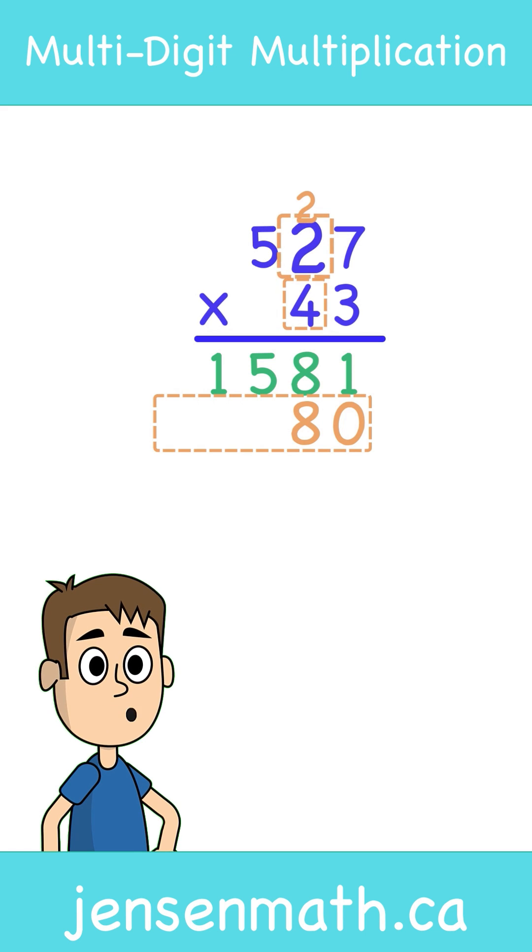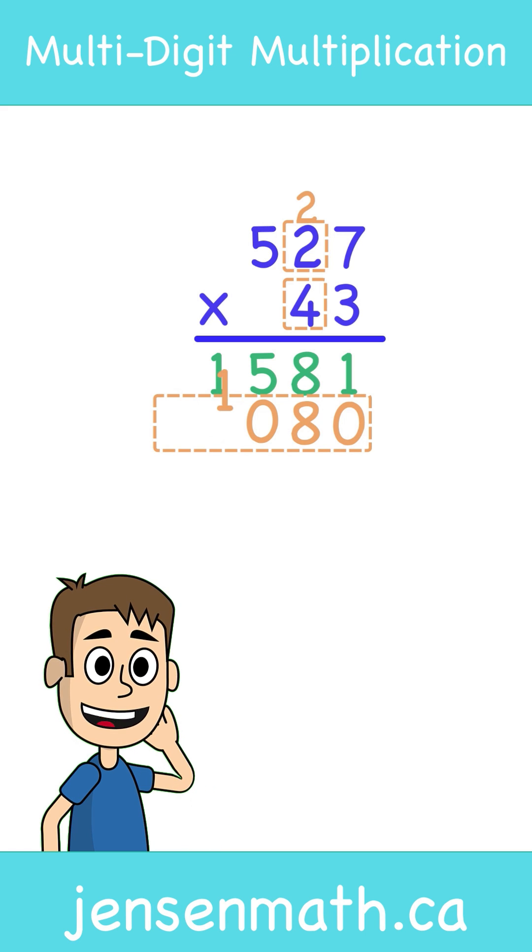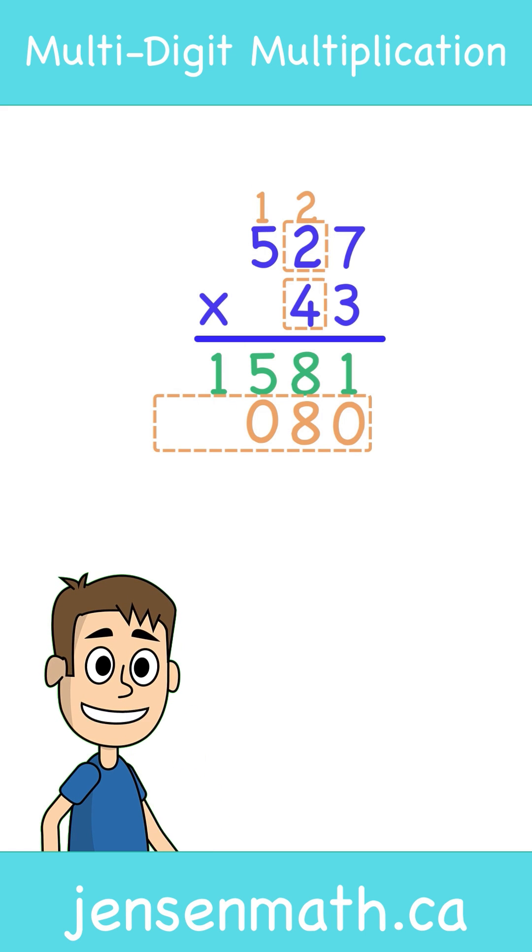4 times 2 is 8. Make sure to add the 2 we carried. 8 plus 2 is 10. We will leave the 0 in the product, but carry the 1 up above the next digit in the top number.